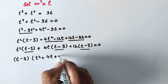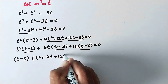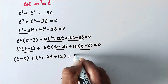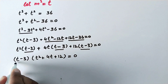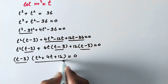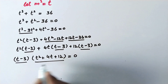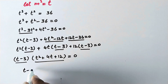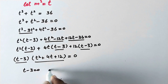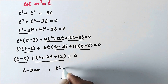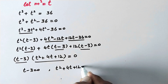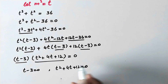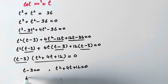This gives us (t minus 3) times (t squared plus 4t plus 12) is equal to 0. Since we have two factors equal to zero, we write: t minus 3 equals 0, and t squared plus 4t plus 12 equals 0, giving t equals 3.